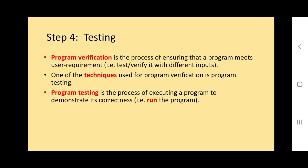Step four is testing. We compile and run the coding to verify whether the program we made is correct or has errors. Program verification is the process of ensuring that the program meets user requirements, tested with different inputs. Program testing is the process of executing the program to demonstrate its correctness - we run the program to verify whether it is correct or not.